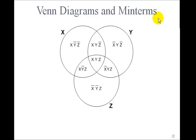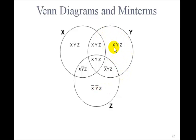This shows how Venn diagrams are related to min terms — each of these little areas is one of the min terms. For example, this area is x AND NOT y AND NOT z. Here we're in x but not in y and not in z. This area is NOT x AND NOT y AND z. Up here is NOT x AND y AND NOT z — only in y, not in x and not in z. This little area is x AND y but not in z. This is x but not y but in z. This is not x but in y and in z. The little triangle in the middle is x AND y AND z.